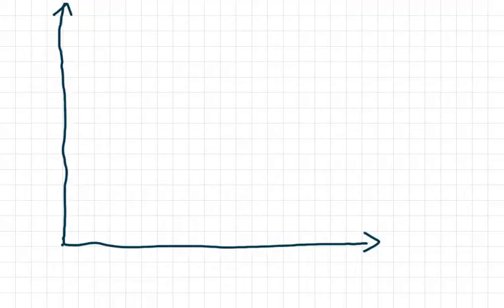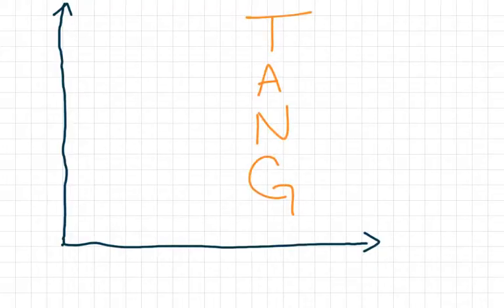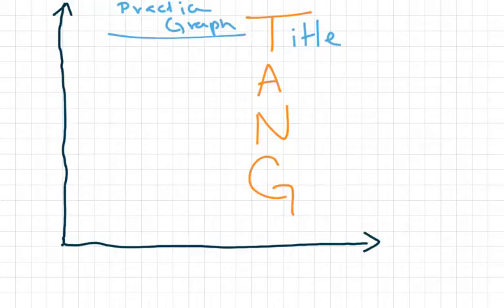We will talk much more about graphing on a coordinate plane during your 6th grade year. But just as a refresher, remember we always want to have TANG when we have a graph. TANG stands for your graph should have a title, like practice graph. The title should normally depend on the context of your problem. Like if you're talking about puppies and how much food they eat, you might title your graph how much food a puppy eats. Something to tell the reader what it's about.